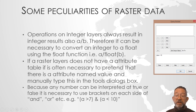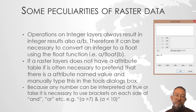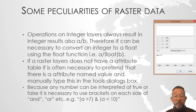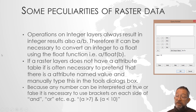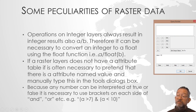You can avoid this by forcing one of the inputs to be a float. Either write the constant as 2.0 instead of 2, or use the float() function: for example 'raster_fives / float(raster_twos)'. Both approaches will return a floating point raster layer with a value of 2.5.